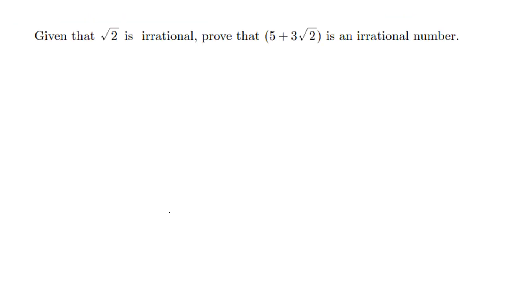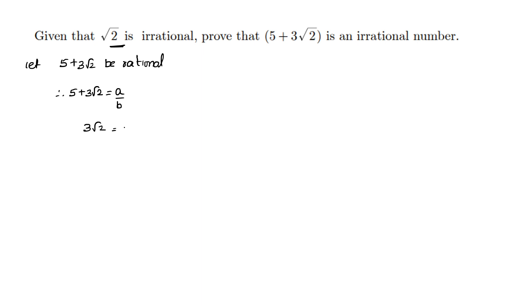A similar type of question: given that root 2 is irrational, we have to prove that 5 plus 3 root 2 is irrational. So, assuming that let 5 plus 3 root 2 be rational, therefore 5 plus 3 root 2 is equal to A by B. Separating root 2: root 2 is equal to A minus 5B by 3B.